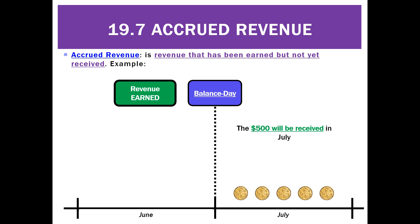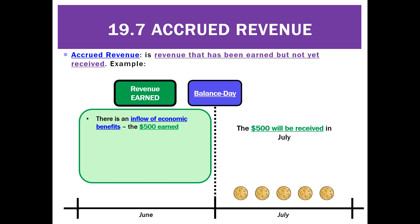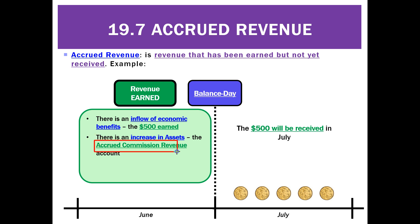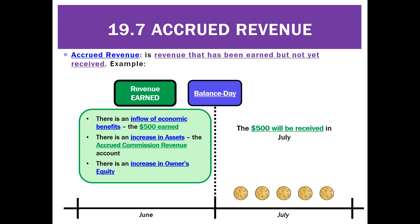So we've got two amounts to consider. We've got revenue, which is earned, and the three parts of revenue are: it's got to be an inflow of economic benefits — well, we've got a promise of the $500 and we're eventually going to get that, which is an inflow just like a credit sale would be. We've got an increase in assets — it's actually a new asset. It's not cash because we haven't got the money, and it's not debtors control because this isn't a credit sale. This is accrued revenue, so we're going to create a new asset called accrued commission revenue. And lastly, it is going to increase owner's equity.